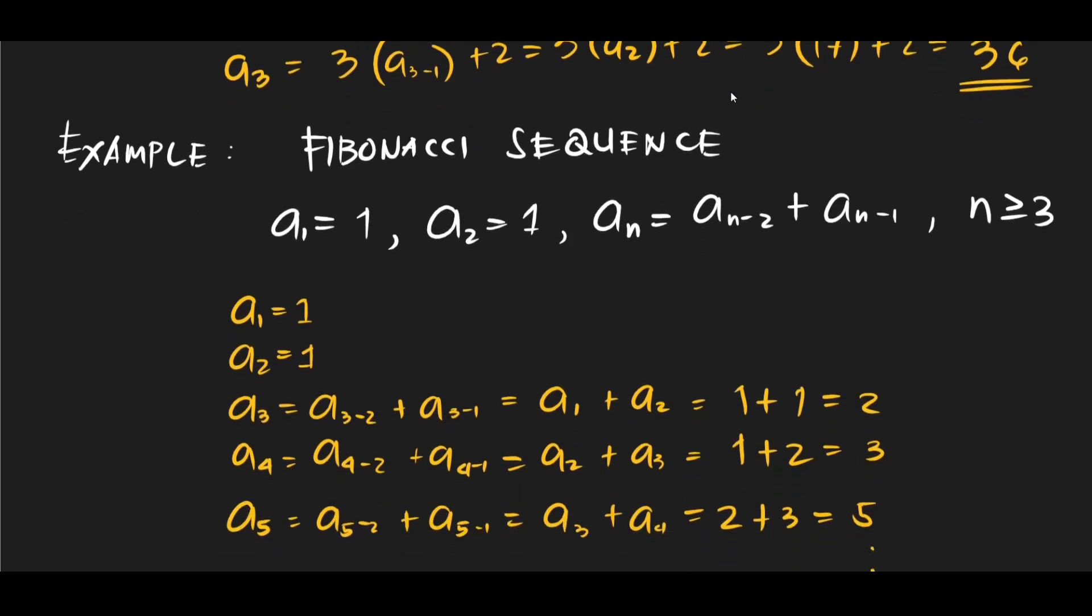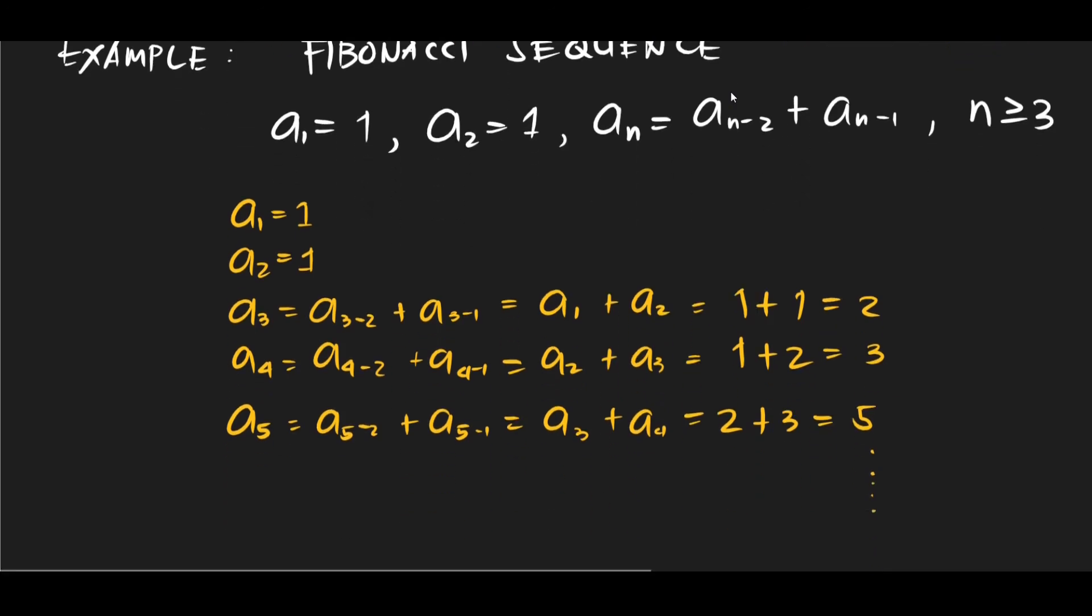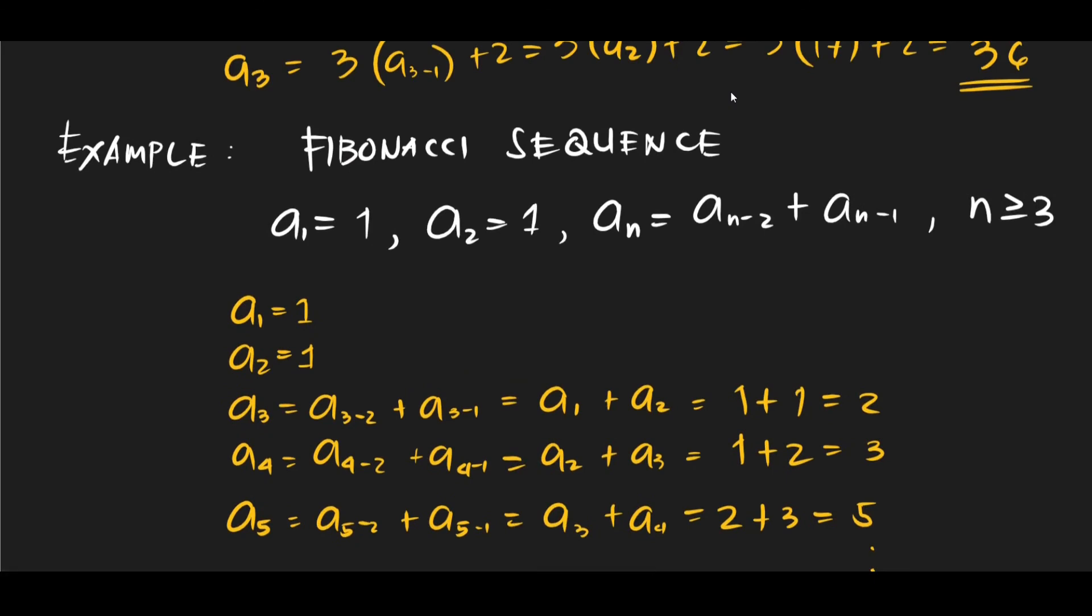Okay, the Fibonacci sequence is actually pretty famous because it occurs in many natural phenomena and you can search that up online. It's actually pretty cool. It occurs in the spirals of sunflowers, the population change of rabbits from a single pair, so it also follows a Fibonacci sequence, even to the number of leaves. So you can search that up and it's actually really cool. So thank you for watching this video and we'll see you in the next ones.